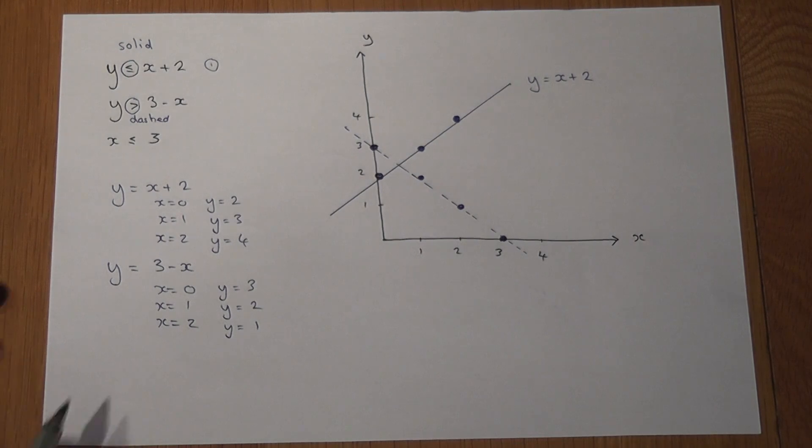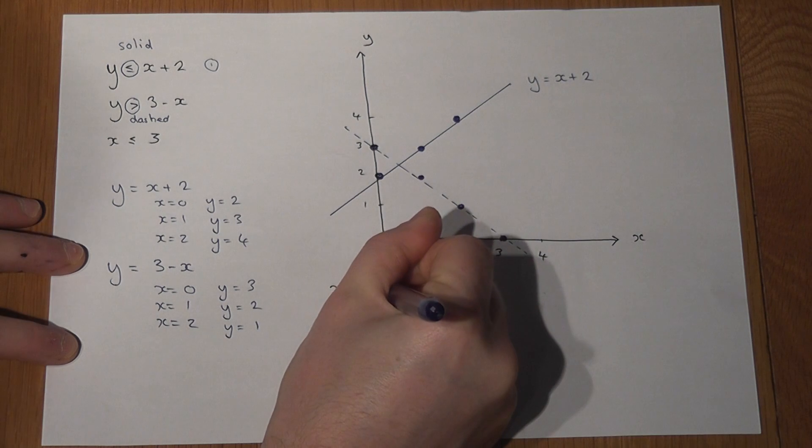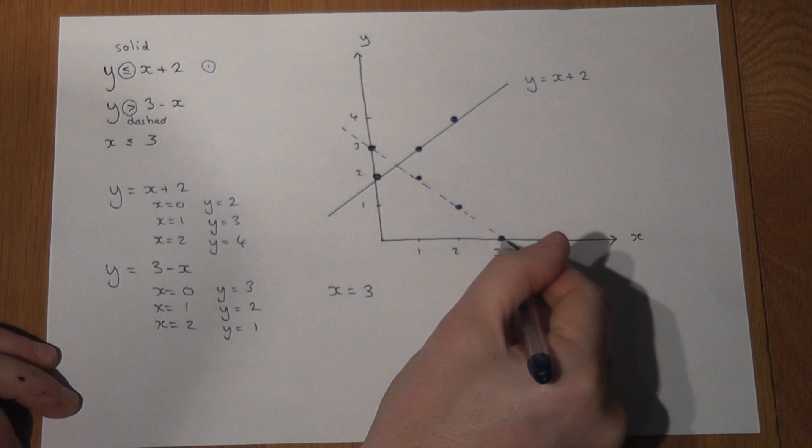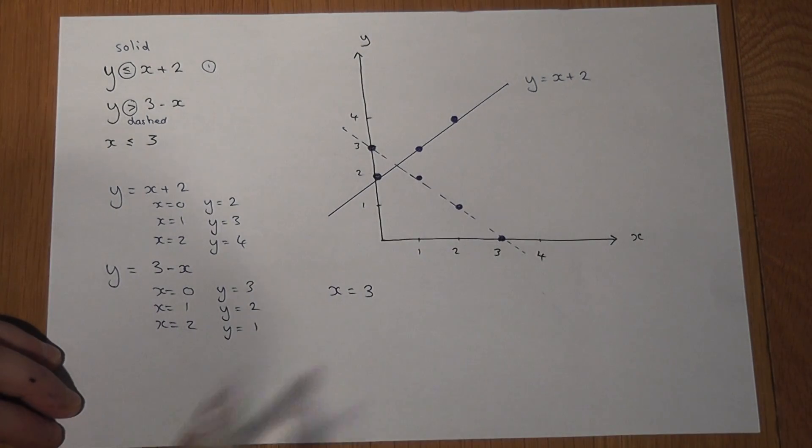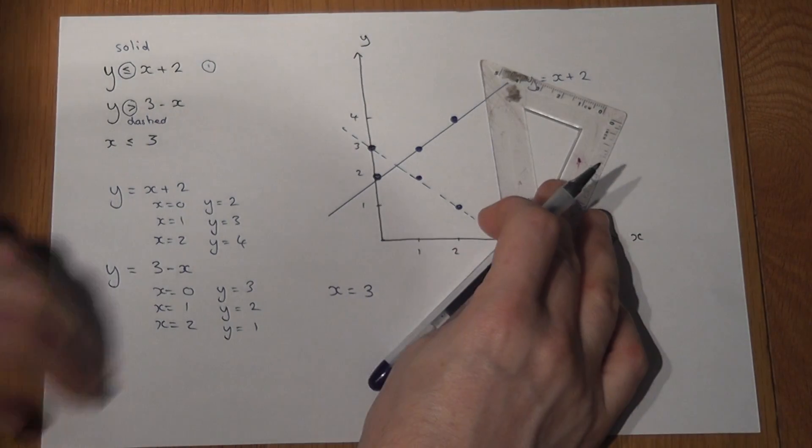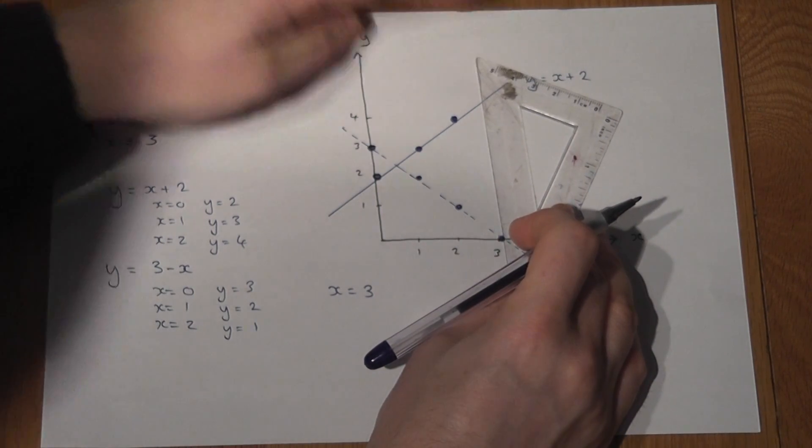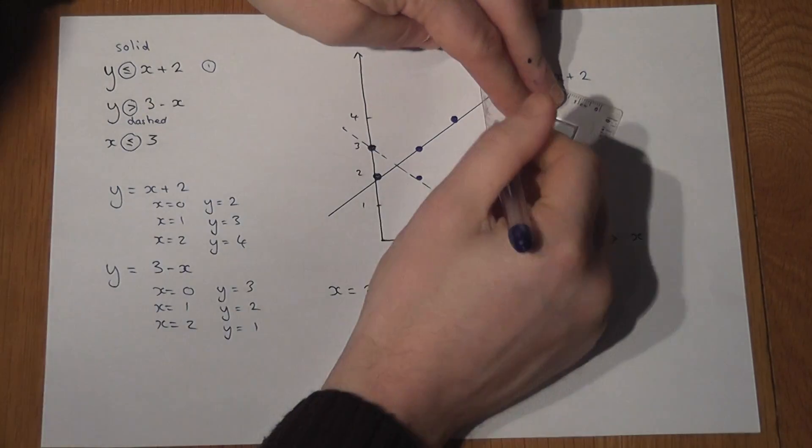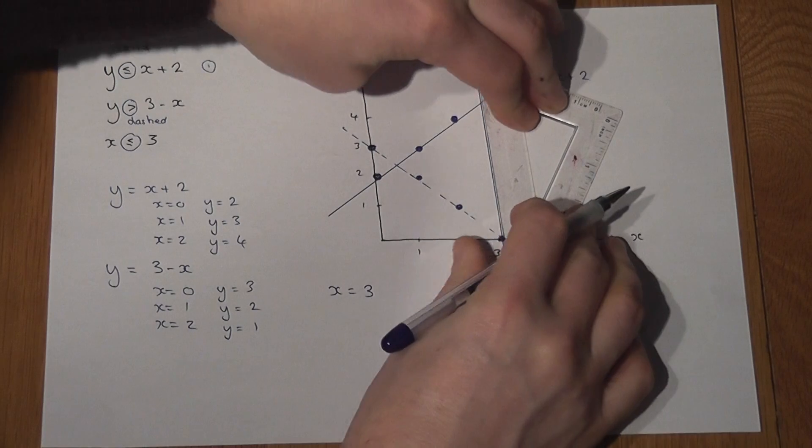Now the last one is the line x equals 3. This is quite a simple line to draw because the line in which every x coordinate equals 3 has got to be a vertical line passing through 3 on the x axis. However, it's a solid line, so I'll just draw a line going down which is solid like so.